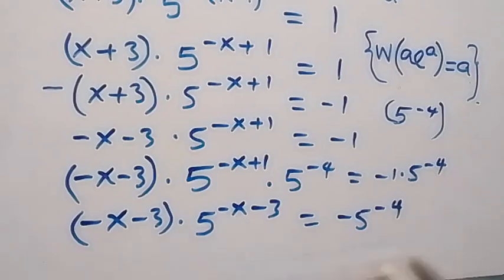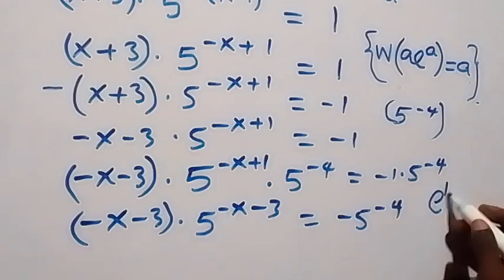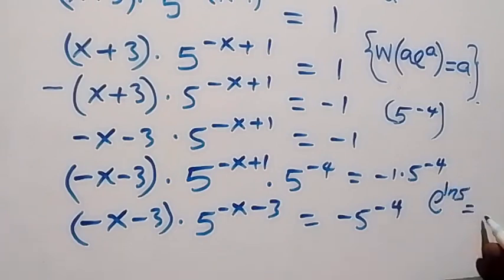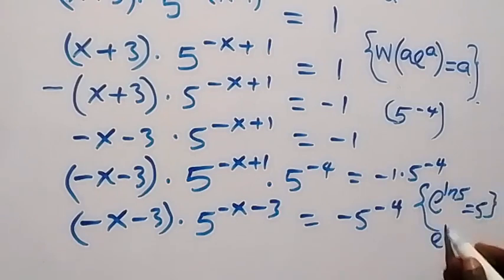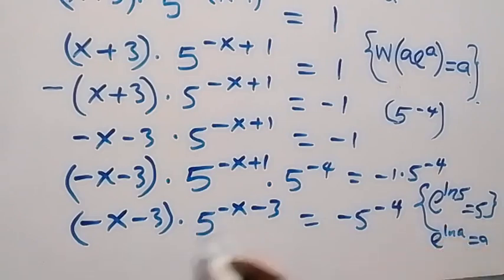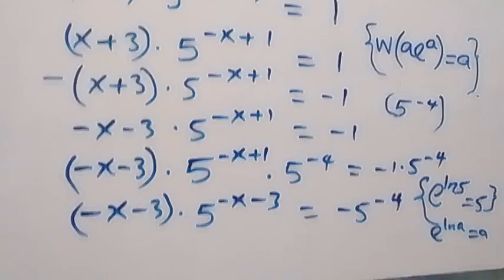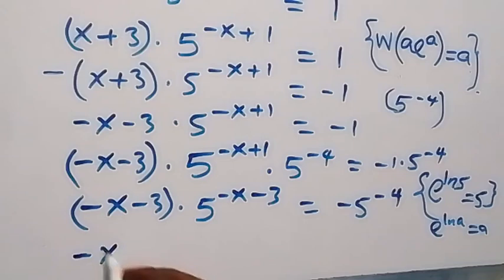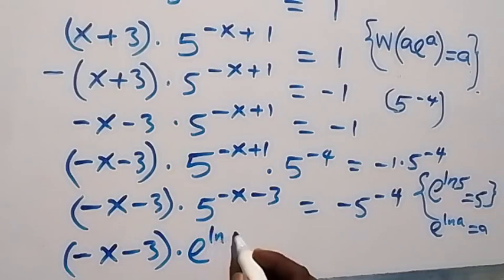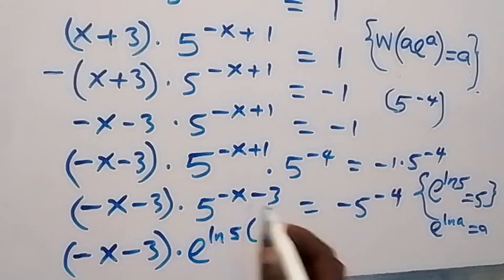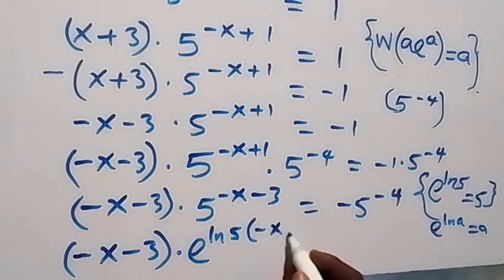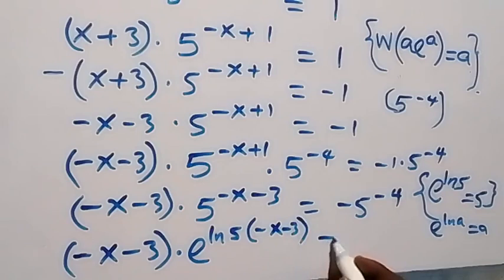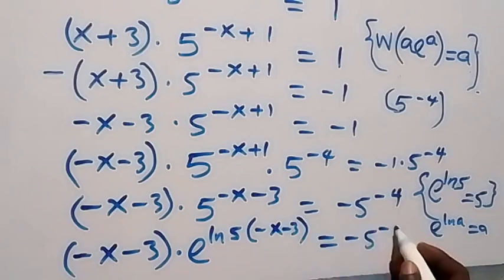We can write 5 again as exponent ln 5 — that's the same thing as 5. So when we substitute this, and we have exponent ln 5 here, we have minus x minus 3, then times exponent ln 5, multiplied by minus x minus 3, equals to minus 5 raised to the power minus 4.